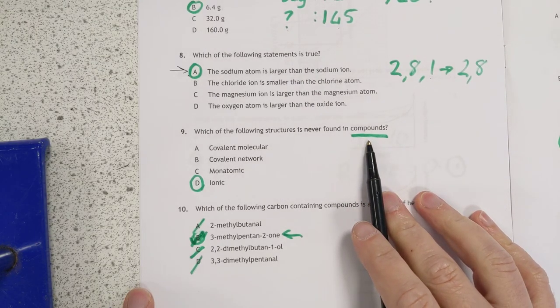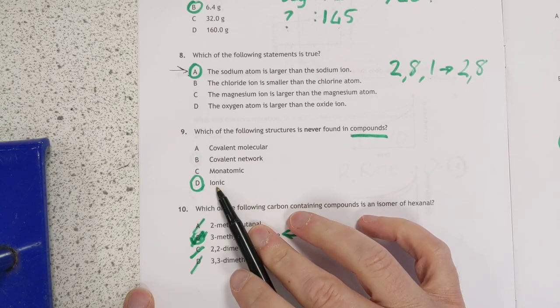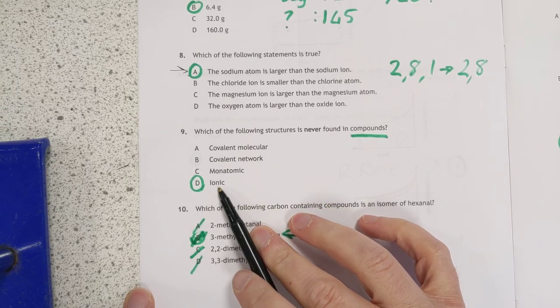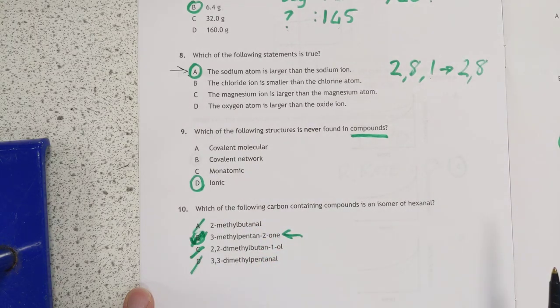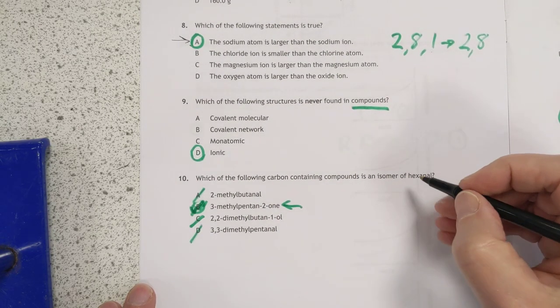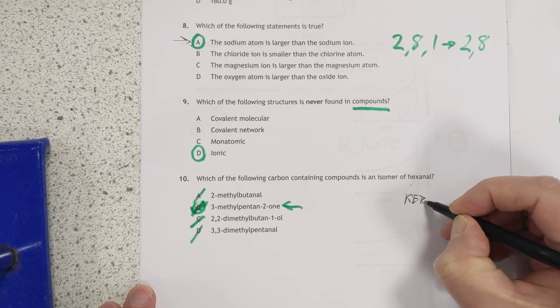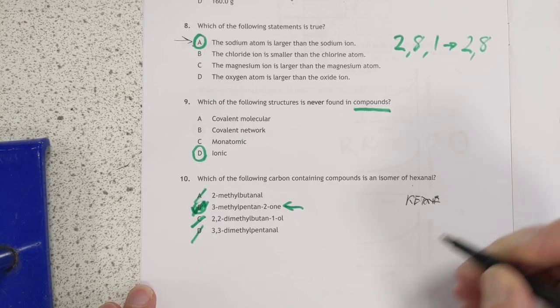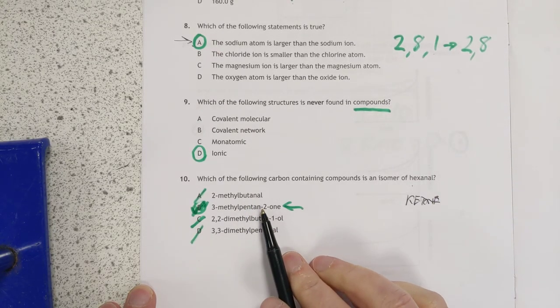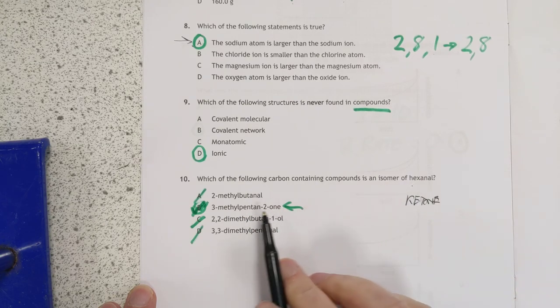Which of the following is never found in compounds? Well, you do get all these, basically, except this. You don't get any ions in compounds because they haven't swapped electrons in a compound. Isomer of hexanal. This is an aldehyde. Aldehydes are isomers of ketones. So that would be my shortcut for this. First of all, find the ketone. There is only one. And just check, 6 carbons in this and 5 plus 1 is 6, there you go, that's your answer, it's B.